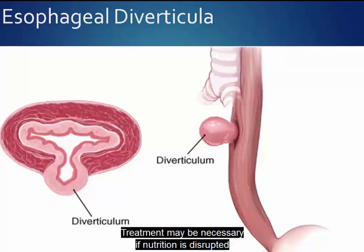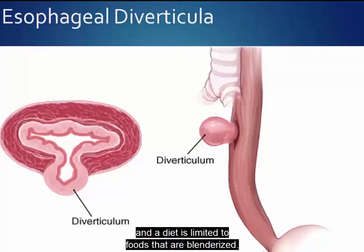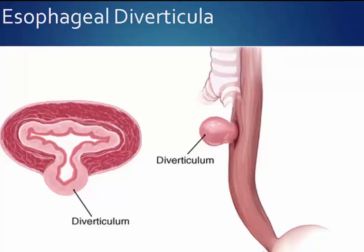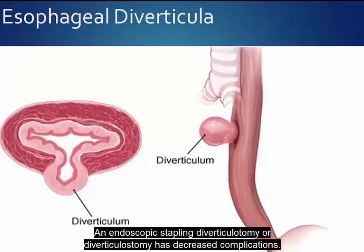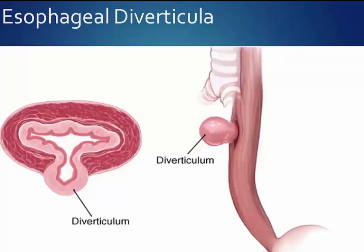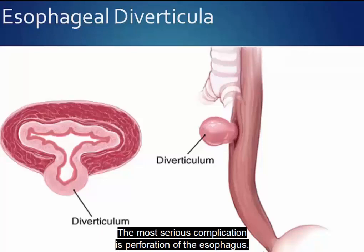Treatment may be necessary if nutrition is disrupted and a diet is limited to blenderized foods. Surgery would be an endoscopic or open approach. The open approach has significant morbidity. An endoscopic stapling diverticulotomy or diverticulostomy has decreased complications, and is preferred because most patients are older with other medical problems. The most serious complication is perforation of the esophagus.